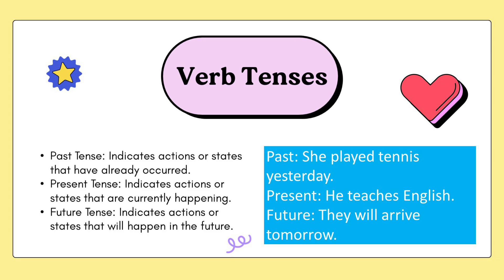Verb tense: past tense, present tense, and future tense. Past tense indicates actions or states that happened before. Present tense indicates that any action or situation is currently happening. Future tense indicates that any action or state will occur in the future. For example — past: 'She played tennis yesterday.' Present: 'He teaches English.' Future: 'They will arrive tomorrow.'